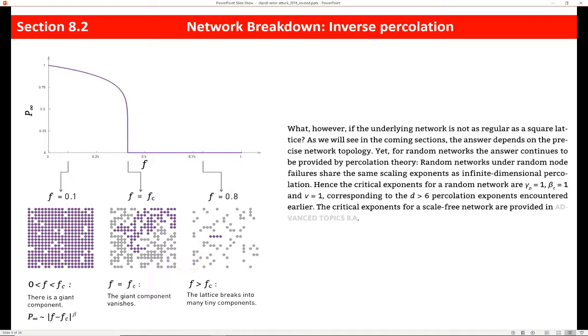So in other words, there's a finite fraction of nodes at which we lose the giant component. So in a square lattice and a random network.